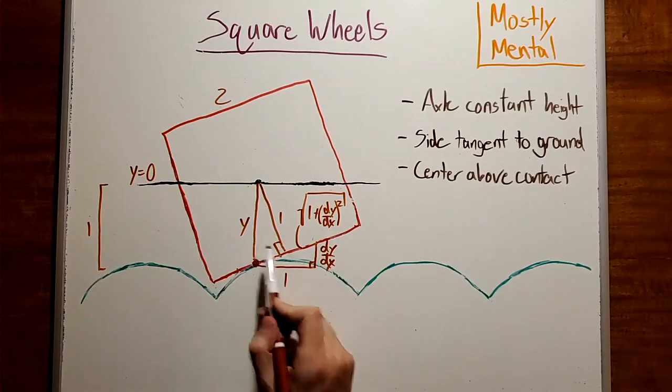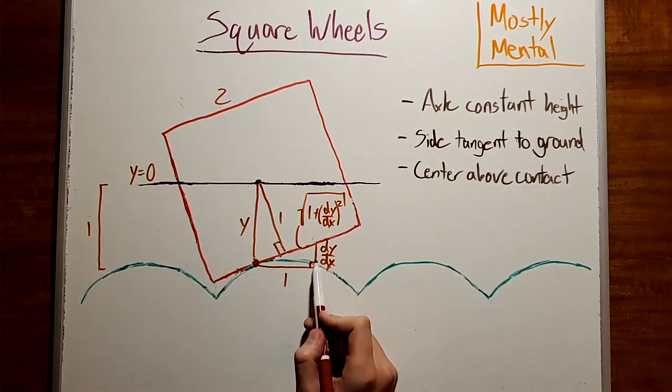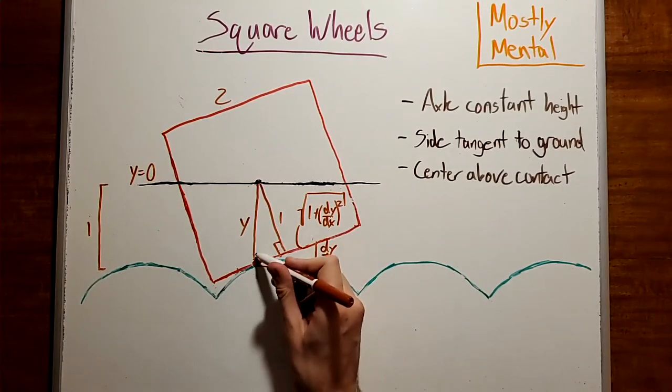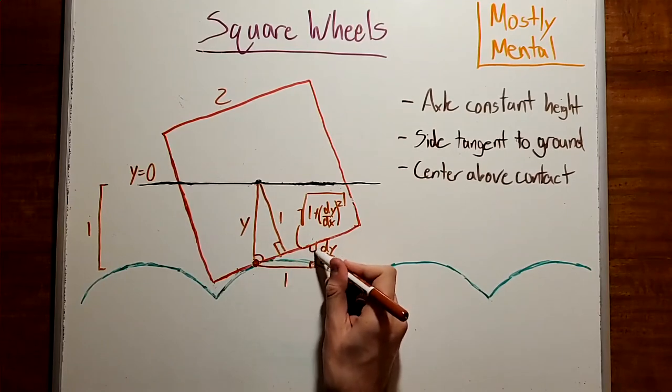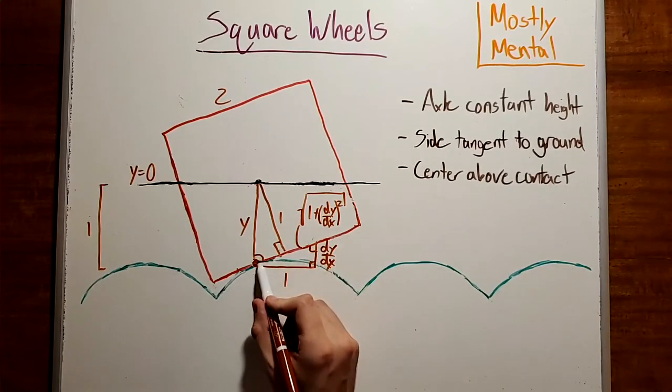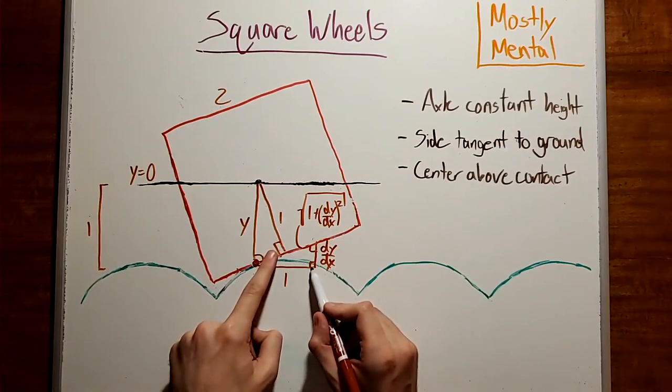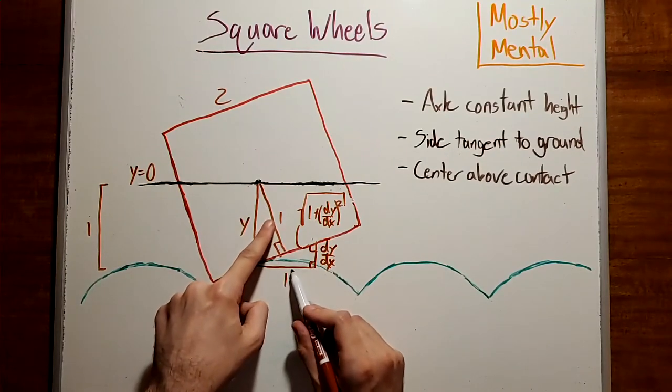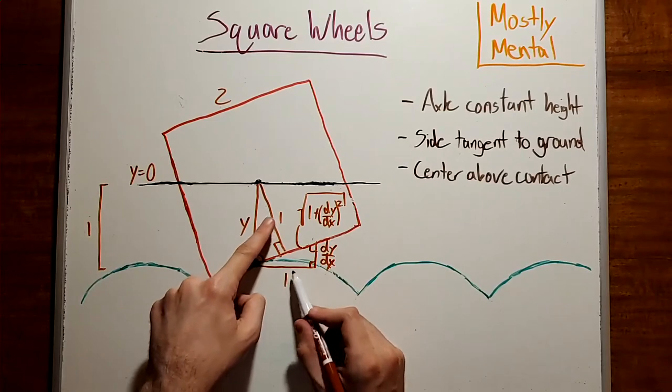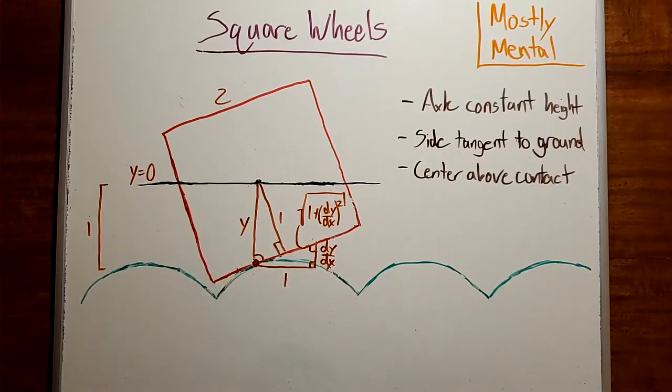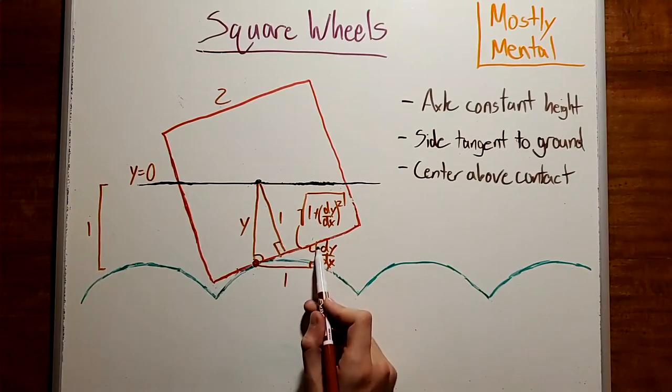But hang on a second, this and this are both vertical lines. Which means by alternate interior angles, these two must be the same. And then these two are right angles, and these both have length 1. So by side angle angle congruence, these two triangles must be congruent.